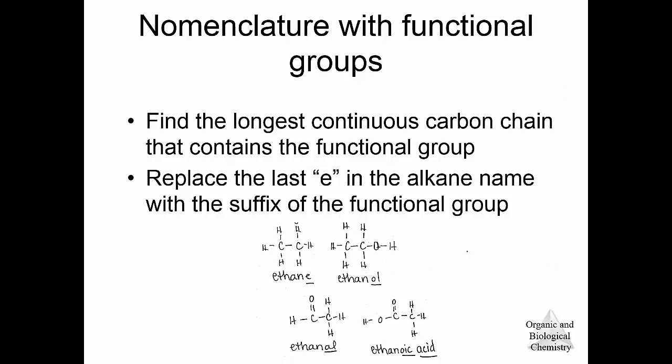How you name things with functional groups is you find the longest continuous carbon chain that contains the functional group and then you think about what the alkane name would be. Like in this example, if I have a two-carbon alkane, I call that ethane, and then I take that alkane name and remove the E and replace it with the suffix of the functional group. So if it's a two-carbon molecule that has an alcohol group attached to it, I call it ethanol. If it's a two-carbon aldehyde, you call it ethanal with an -AL ending. And if it's a two-carbon carboxylic acid, it would be ethanoic acid.